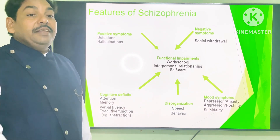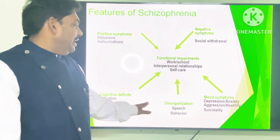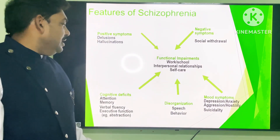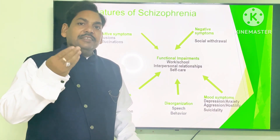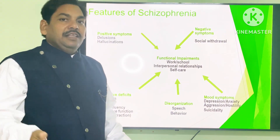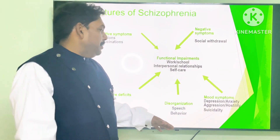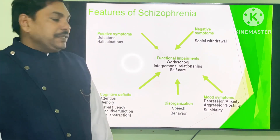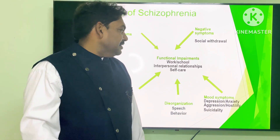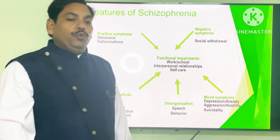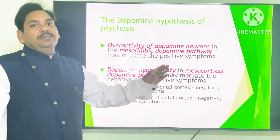The person may be deficient in cognition. Disorientation of speech and behavior means they do not have organized speech during talking. Mood symptoms include depression, anxiety, agitation, hostility, and suicidal mood.